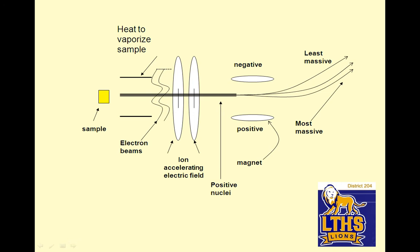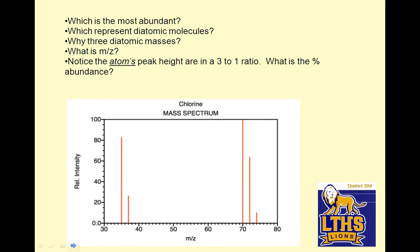So what happens is you have a sample, you vaporize it, it turns into a gas, you shoot it fast, so you knock off its electrons, so it's the nuclei. And since all nuclei are positive, then they'll be attracted to the negative thing. Remember, it's already accelerated. And if it's really light, it'll curve a lot. If it's really heavy, it'll curve very little. And that's basically it, and it gives you a readout like this.